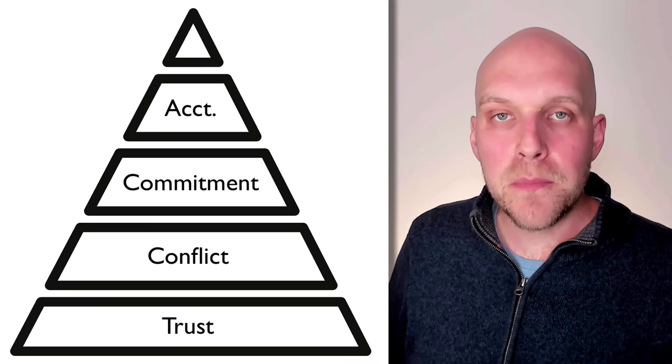The tip of the pyramid is the inattention to results. The classic example is sales versus marketing. When the team has dysfunction, the marketing person says the salesperson can't close the leads coming in, and the salesperson says the leads are no good. Everybody is looking out just for their own self-interest. When individuals are paying attention to their personal results over the results of the company, this dysfunction is created. You want to make sure everybody has a commitment to the team results and the company's results.